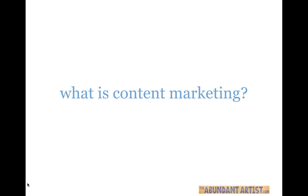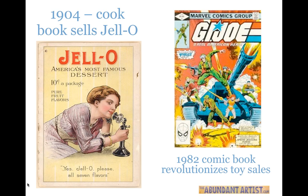Let's talk about what content marketing is. Content marketing is a specific subset of marketing that has been around for quite a while — it didn't start with the Internet. It started back in 1904. There was a company called Jello, and they thought, how do we get more people to buy Jello? They created a cookbook and sold it as ways to create things with Jello, and it was phenomenally successful. People bought thousands of copies of the Jello cookbook, and it made Jello a household name.